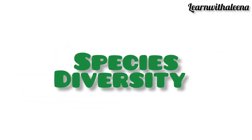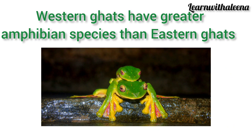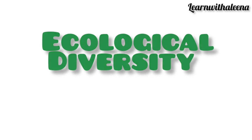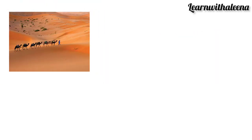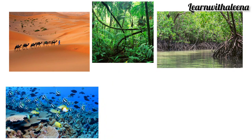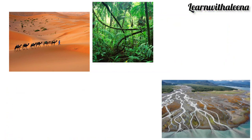Species diversity includes diversity at the species level — for example, the Western Ghats have greater amphibian species than the Eastern Ghats. Next is ecological diversity. At the ecosystem level, India has deserts, green forests, mangroves, coral reefs, wetlands, estuaries, and alpine meadows — far more than a Scandinavian country like Norway.